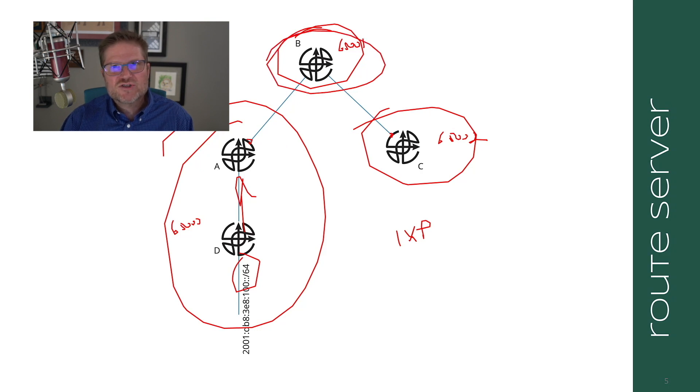So if B is a route server rather than a route reflector, what will happen is, is that when A sends the route to B, B, even though it's in a different autonomous system, will preserve the next hop and send C the route with the next hop pointing to A.